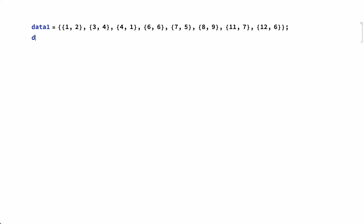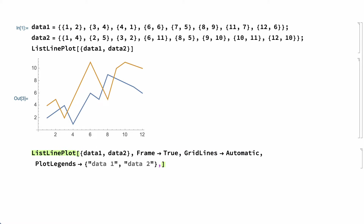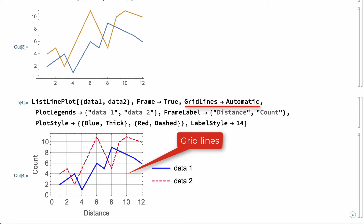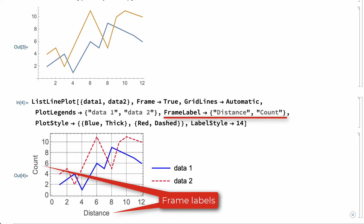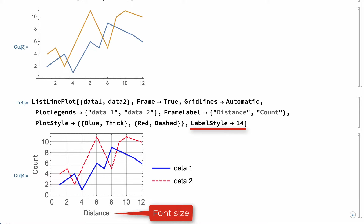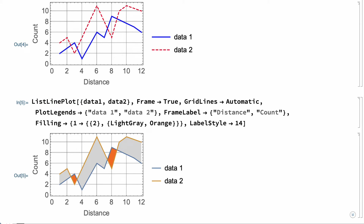To illustrate some common things that are done using options, this input shows a line plot without any additional options, and this shows the same data with various option settings of the enclosing ListLinePlot function. In this example, the FrameTrue option adds a frame around the plot. The GridLines option specifies the horizontal and vertical lines in the plot. The PlotLegends option adds the legend. The FrameLabel option specifies the labels around the outside of the frame. The PlotStyle option specifies styles for the lines, and the LabelStyle option gives the font size to use for labels. Small changes of options can have a large effect on the appearance of a plot. For example, here is another plot of the same data using the Filling option to add shading between the lines, which can be useful for emphasizing differences between two datasets.